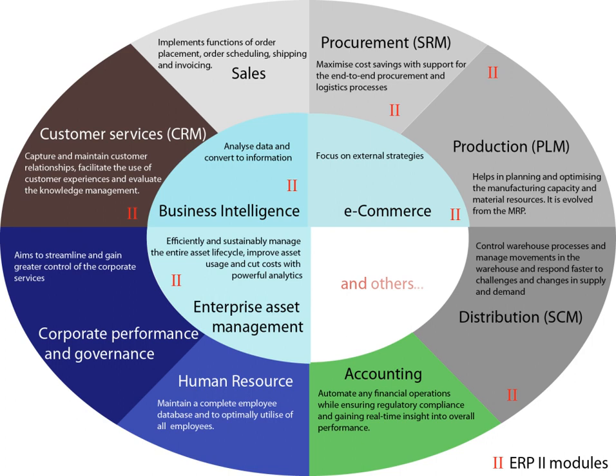An ERP system covers the following common functional areas, called and grouped together as ERP modules. Finance and accounting includes: general ledger, fixed assets, payables including vouchering, matching and payment, receivables, cash management and collections, financial consolidation, management accounting, budgeting, costing, cost management, and activity-based costing.